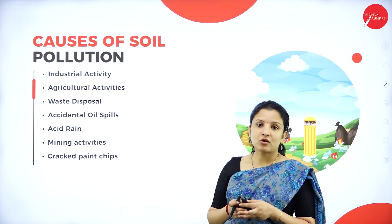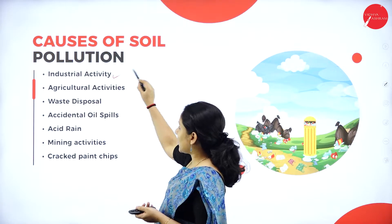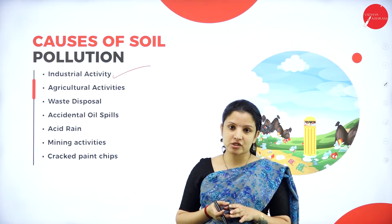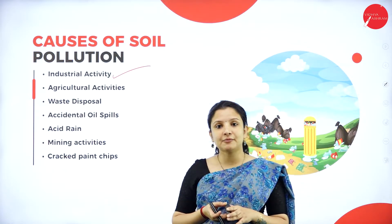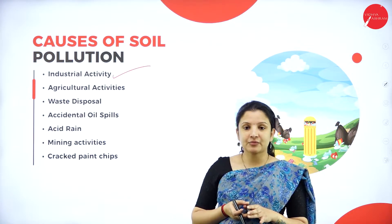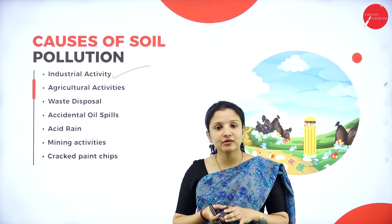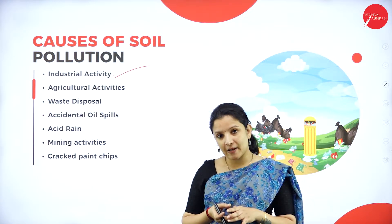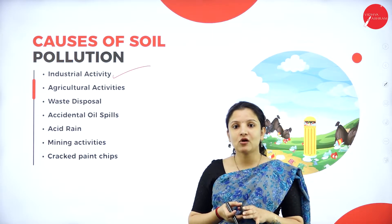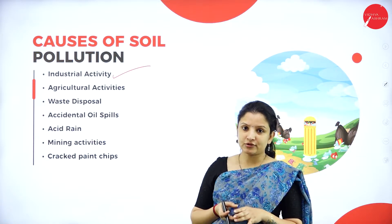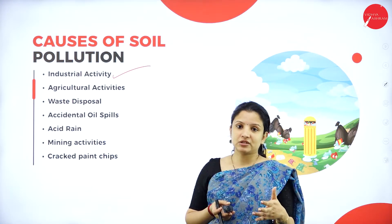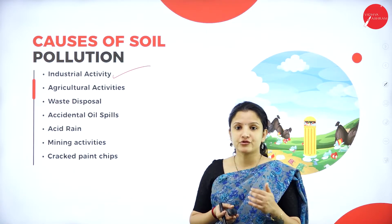The main cause of soil pollution is industrial activity. Industries dump a lot of sewage into nearby rivers and ponds. But apart from that, some waste from industries is dumped into landfills, which during heavy rains can spread and leach deep into the soil, causing contamination. A lot of chemical industries release toxic substances which can cause soil pollution.